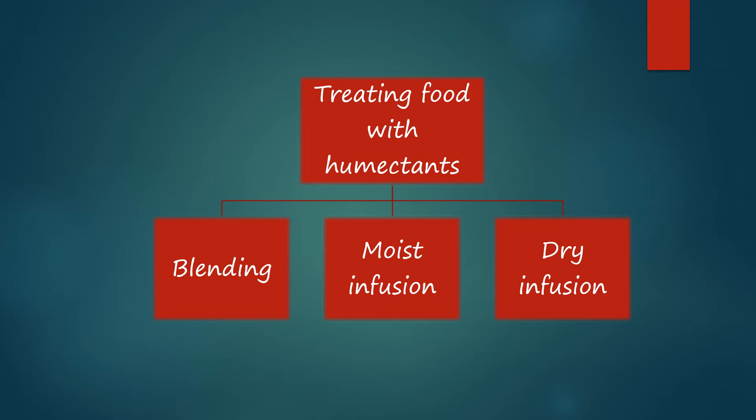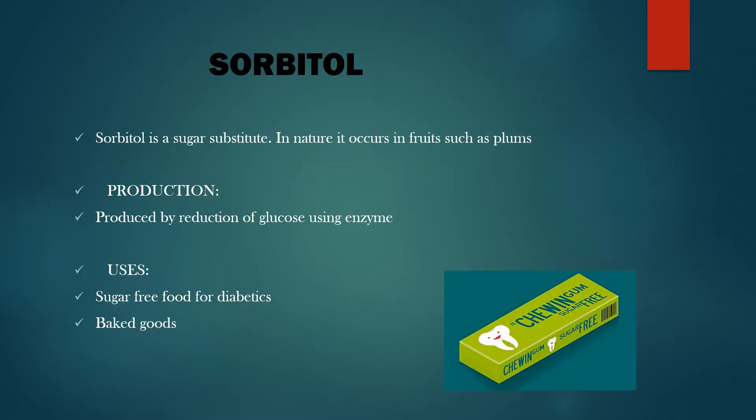The first humectant is sorbitol. Sorbitol is a sugar substitute; in nature it occurs in foods such as plums. It is generally produced from glucose using enzymes. It is used as a sugar-free food additive for diabetic patients and in baked goods.